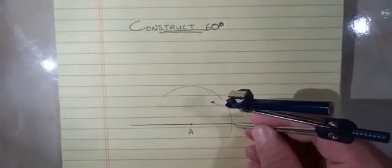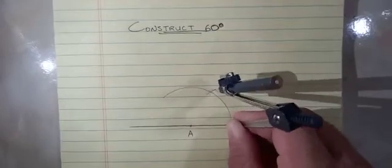We'll put our compass point where the arc intersects the line and draw another arc that intersects the first one.